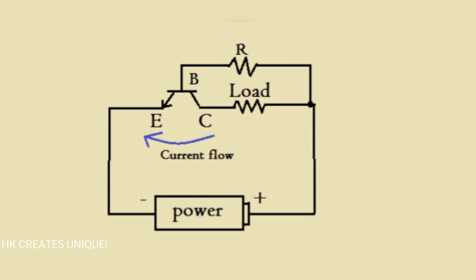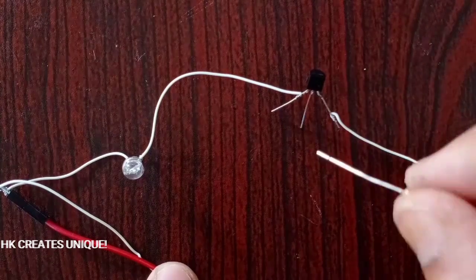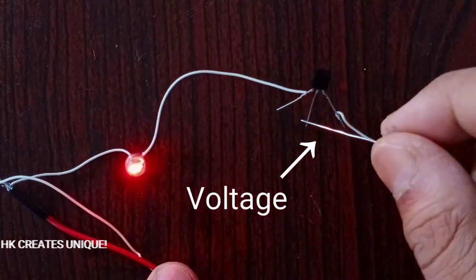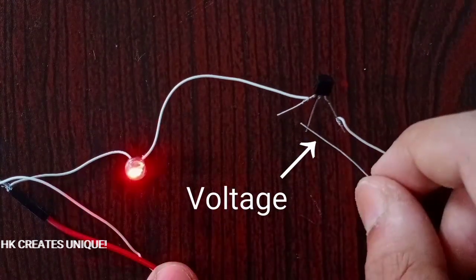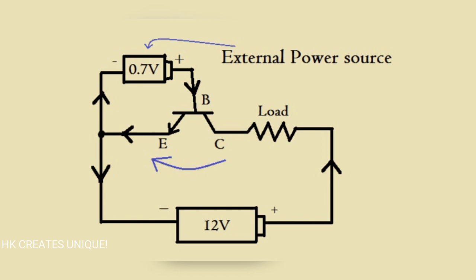In my previous video, I showed you that a transistor can behave like a closed key when we give a voltage at the base from the power supply. In this video, I am going to show you how to control a transistor with external power source.